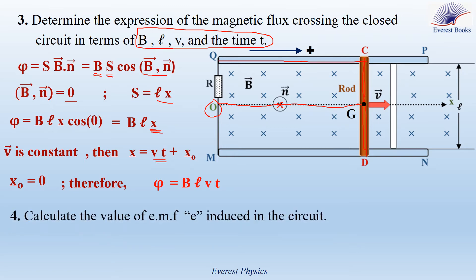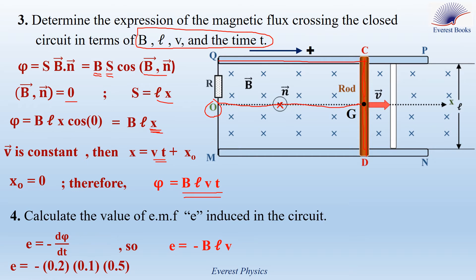Part 4: calculate the induced electromotive force E. From Faraday's law, E = −dΦ/dt. Since B, L, and V are all constant, the derivative of BLVt with respect to time is BLV. Therefore E = −BLV. Substituting values: B = 0.2 T, L = 0.1 m, V = 0.5 m/s, we get E = −0.01 volts.